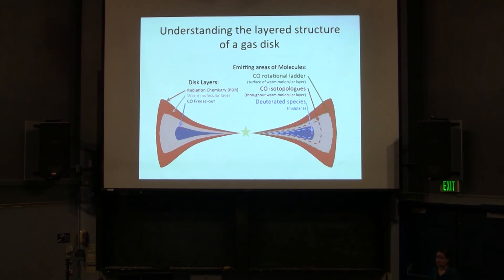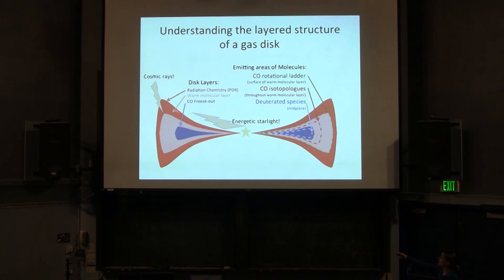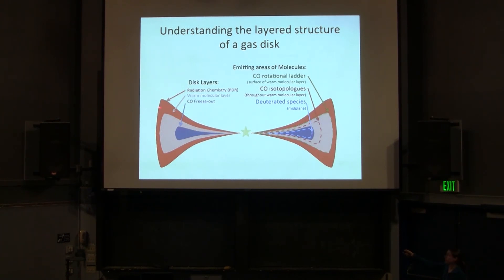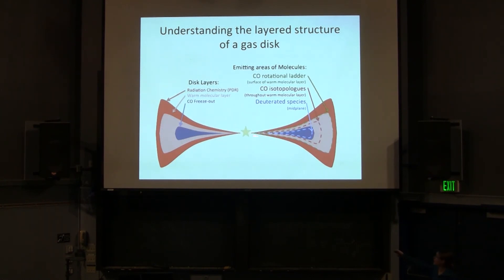We have our star in the middle with our disk around it. This layered structure has basically three regions. One is the surface of the disk dominated by radiation chemistry. That radiation comes from two sources: energetic starlight and cosmic rays that ionize and photo-dissociate material in the outermost layers. So we don't see any carbon monoxide or really any molecules in this surface layer because they're photo-dissociated. The disk gets heated by light from the star and cosmic rays, so the surface layers of the optically thick disk get really hot, but that energy has to diffuse down into the center with imperfect efficiency.